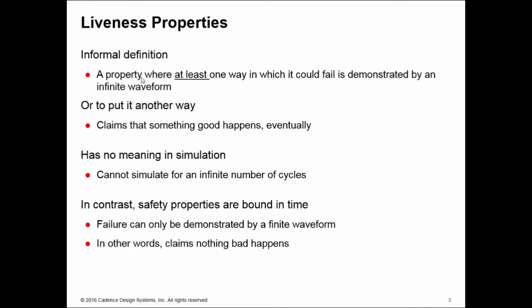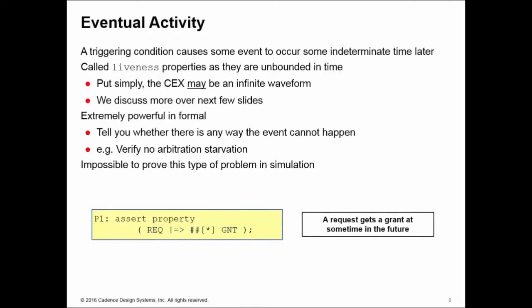The simple explanation of what a liveness property is: a property where at least one way in which you can fail requires you to display an infinite waveform. Or often you see this statement: claims that something good happens eventually. The only way of showing this particular one fail is if we have a request and then we show grant is false forever. That's the only way of demonstrating that.